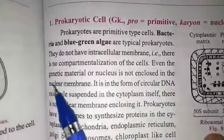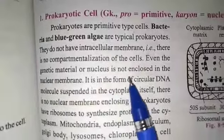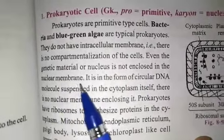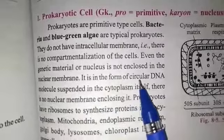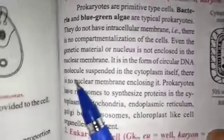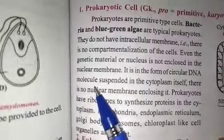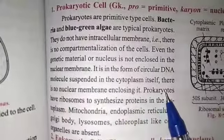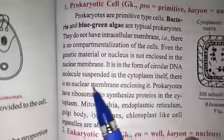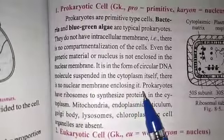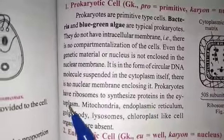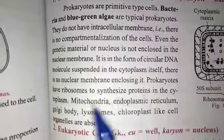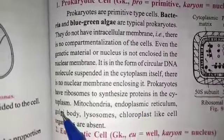Even the genetic material or nucleus is not enclosed in a nuclear membrane. The genetic material exists as circular DNA and nucleic acid suspended in the cytoplasm itself. There is no nuclear membrane enclosing it. Prokaryotes have ribosomes to synthesize protein in the cytoplasm.